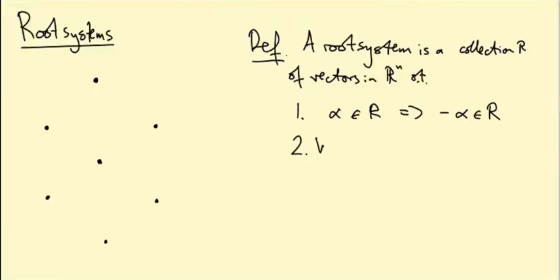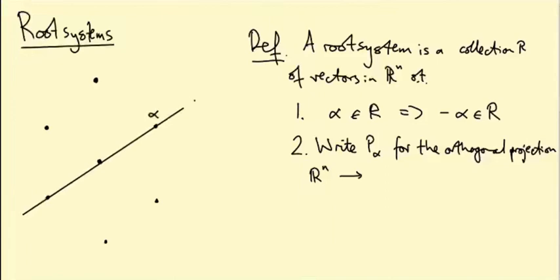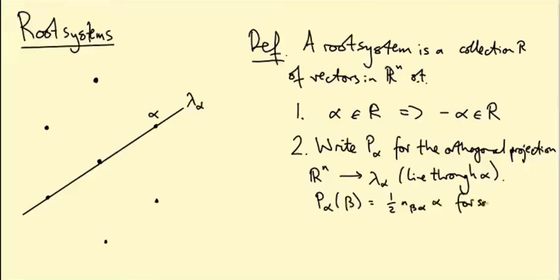Two, let's write P_alpha for the orthogonal projection from R^n to the line through alpha. So let me draw a line through alpha. If this is alpha here, this is the line through alpha, let's call it lambda alpha. Well then P_alpha of another root beta is a half N_beta_alpha times alpha for some integer N_beta_alpha.